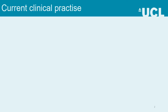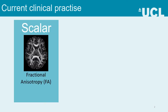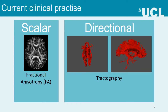The diffusion tensor informs clinicians with scalar tissue microstructure measurements, for example FA, which is sensitive to the anisotropy of diffusion. The diffusion tensor also describes the directional measurements used by tractography to estimate the location of white matter bundles.